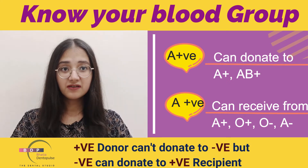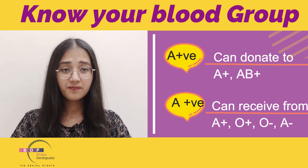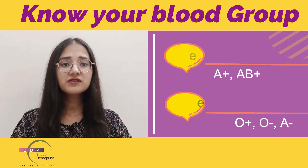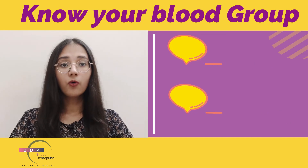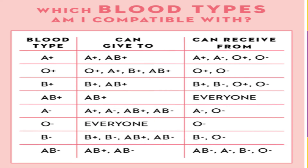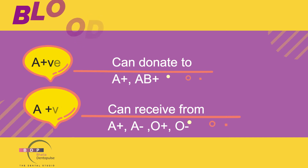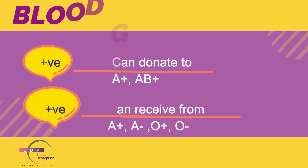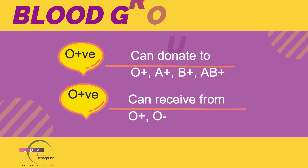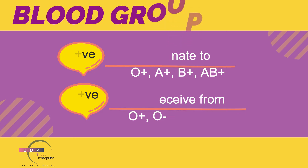If you need to receive blood as A positive, A positive can receive from A positive, O positive, O negative, and A negative. Using this chart, you can find out which blood type you are compatible with. A positive can give blood to A positive and AB positive, and can receive from A positive, A negative, O positive, and O negative. O positive can give blood to O positive, A positive, B positive, and AB positive, and can receive from O positive and O negative.